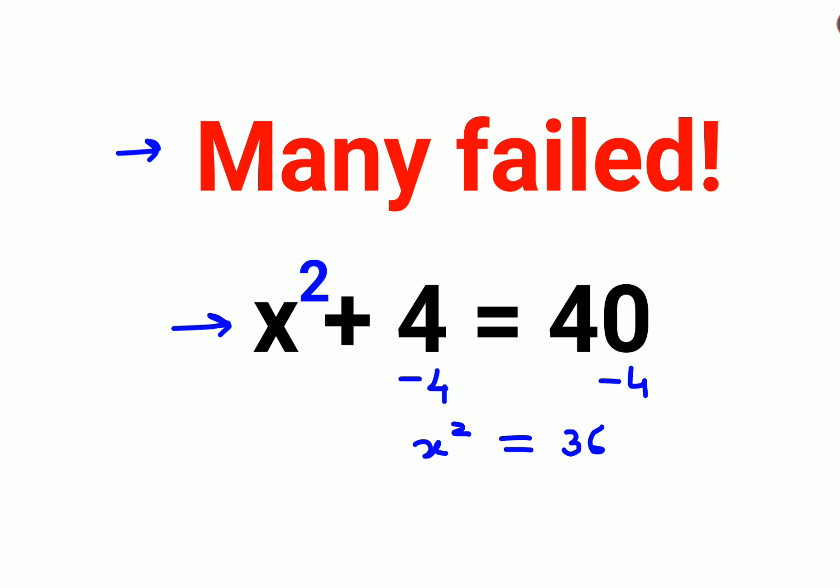Now since we want to find the value of x, we need to take square root on both sides. But since the square root is equal to a variable, the value will be plus minus 6. And root of x square is nothing but just x.